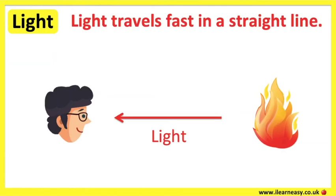Light travels very fast in a straight line. Light can be reflected off surfaces of objects around it. This reflection of light from an object is what allows us to see. Light reflects from a surface at the same angle that it hits. Light can travel directly from the source to the eye, which allows us to see the object — for example, light made by fire.